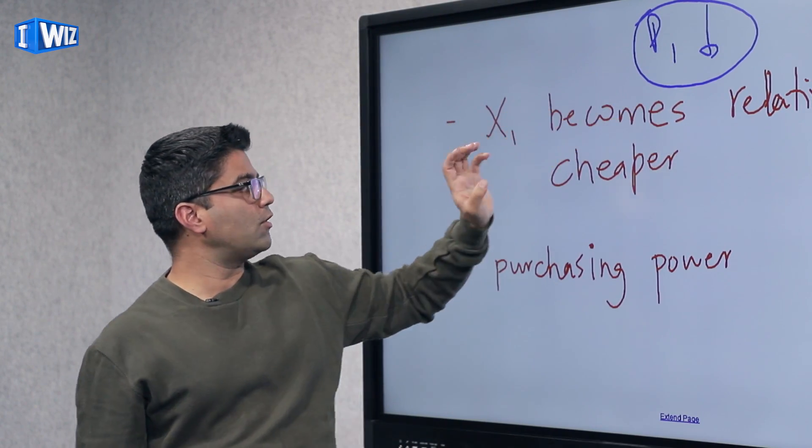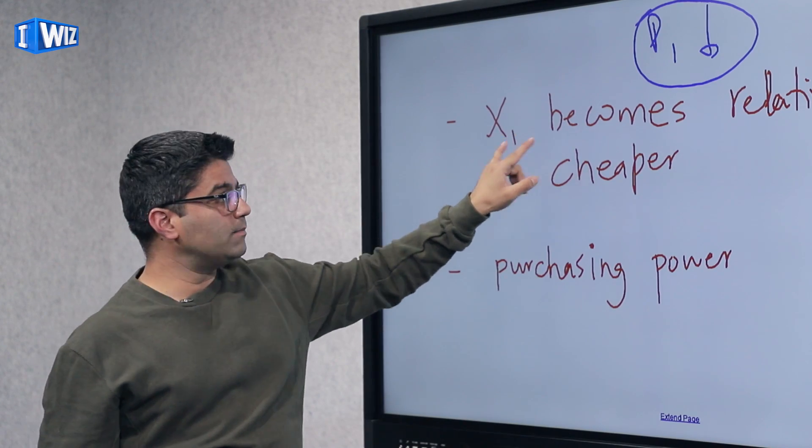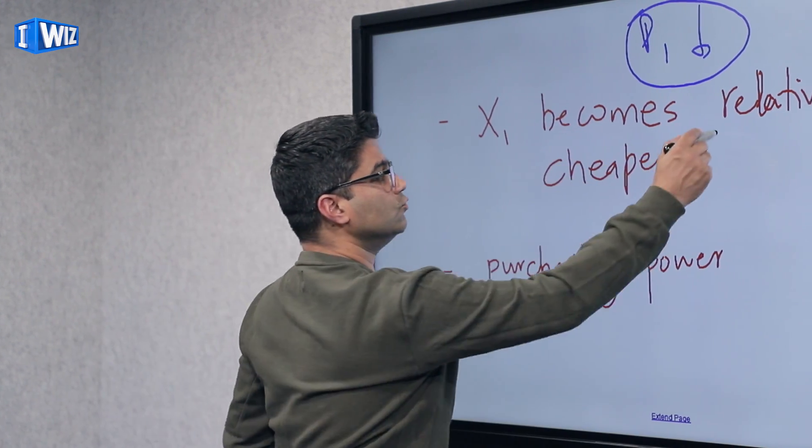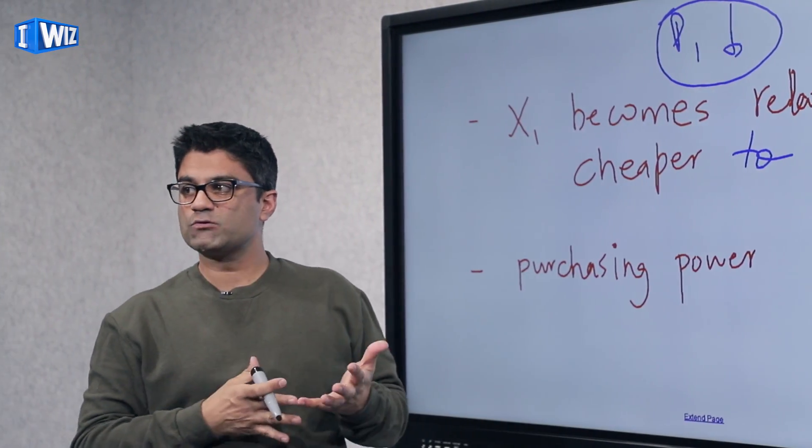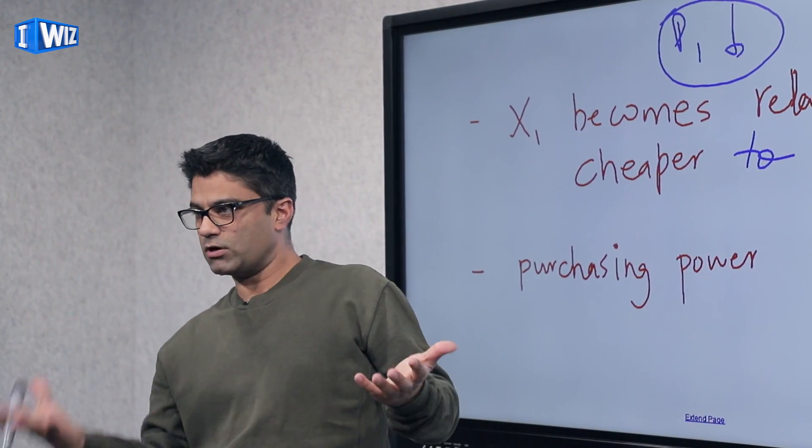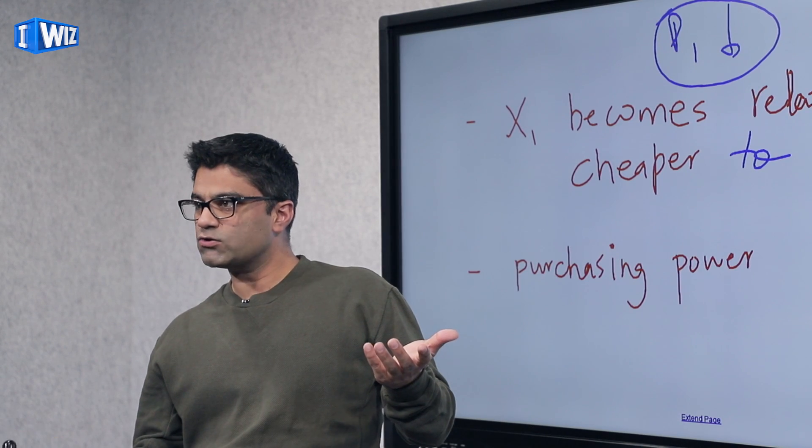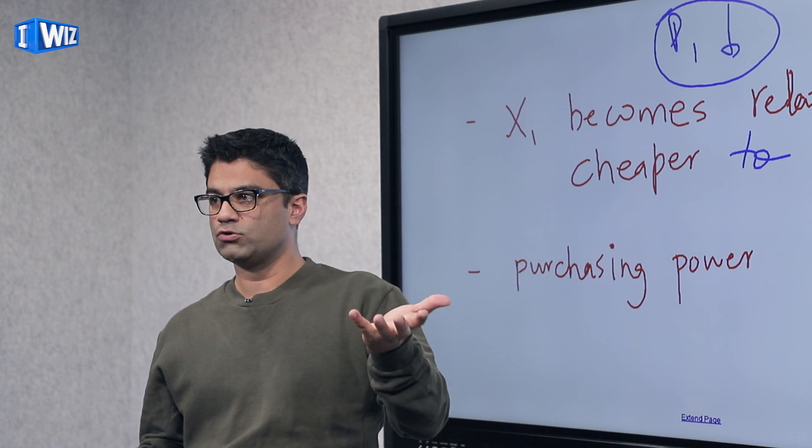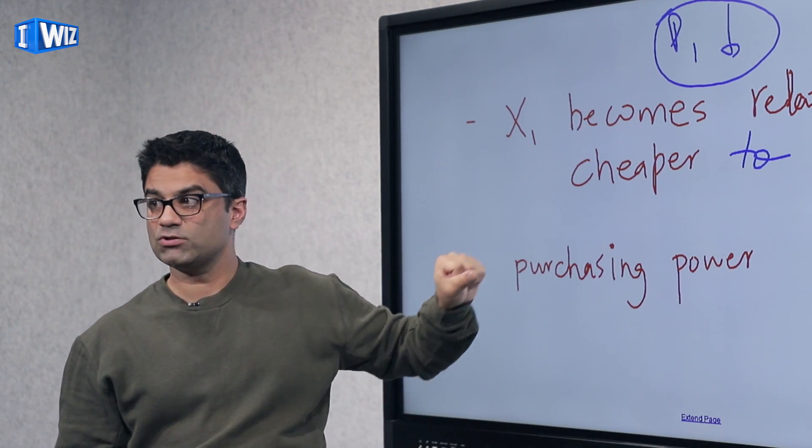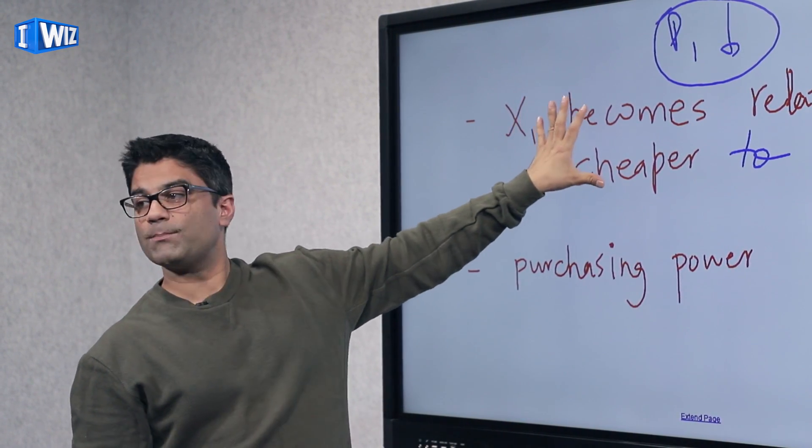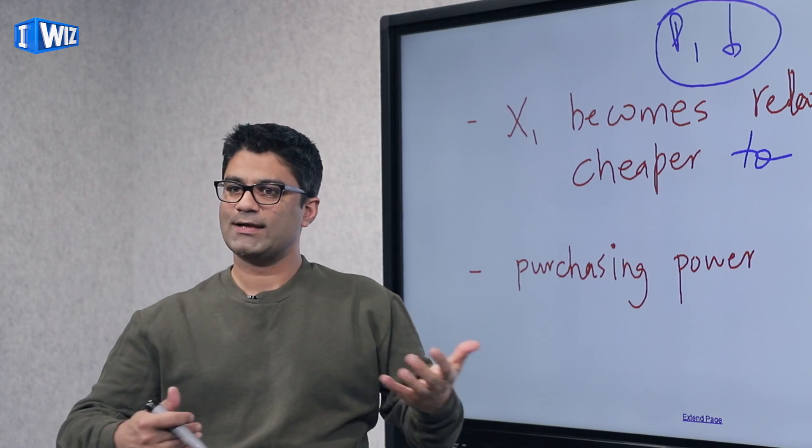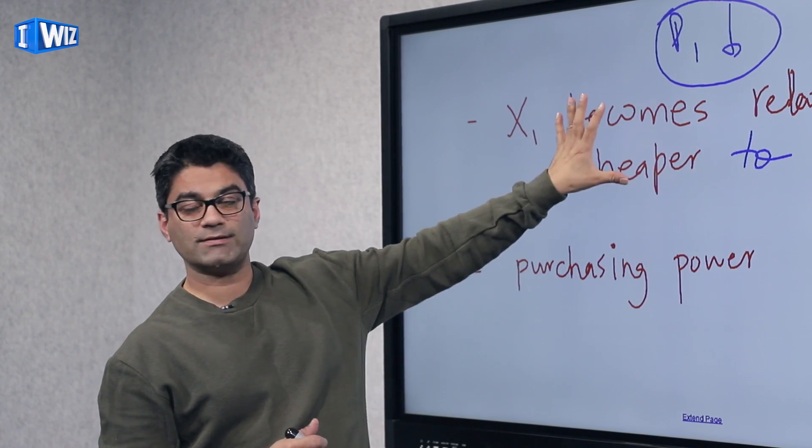So when the price of good one goes down, good one becomes relatively cheaper to good two. So since X2's price has not changed and X1's price has gone down, the first good, X1, is going to become relatively cheaper to good two. So this is what's called the substitution effect, which, again, you should be able to guess this. What this would imply is we would buy more of X1 and less of X2. So that's one thing that happens.